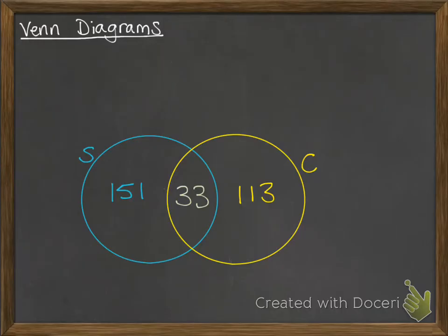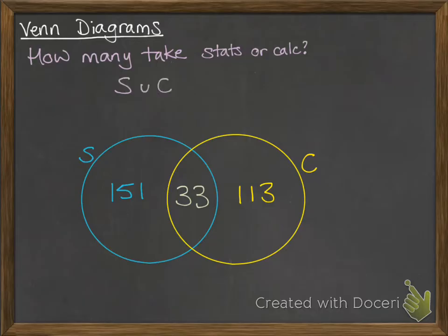Now, once we've set up the diagram from the information, you might be asked some probability questions around it. So for example, how many students take stats or calculus? So this will be anybody that's in any portion of that Venn diagram. So we add those all up, and the notation for that is S union C.